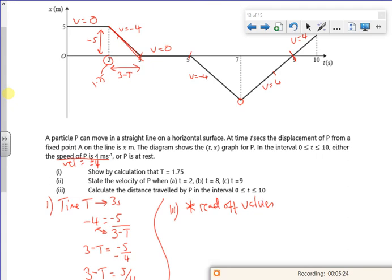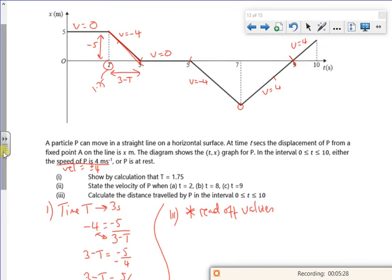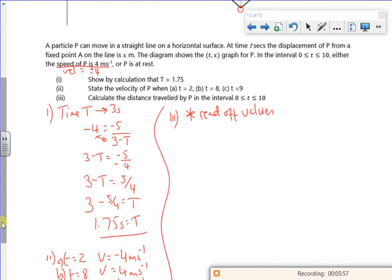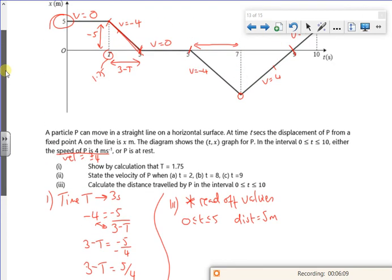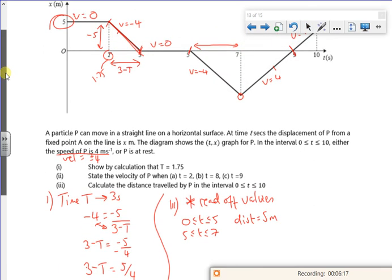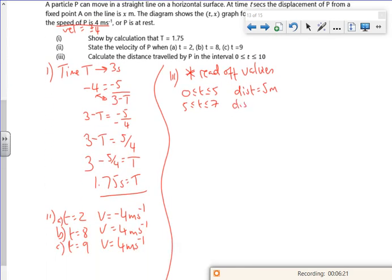So if you think, initially I'm 5 meters away. So I'm 5 meters away, I come back, I sit there. Now for 2 seconds, I travel at minus 4 meters per second. So that's going to be 8 meters away. So from 0 to 5, my distance is 5 meters. From 5 to 7, my distance is 4 times 2.